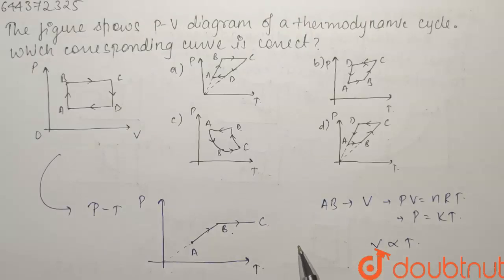If we talk about our next process, that is our process CD. CD is again a process like AB, that is a constant volume process. So it will also be a straight line passing through the origin. This would look something like this.